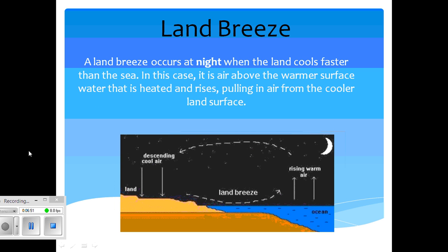With land breeze, a land breeze occurs at night time when the land cools faster than the sea. In this case, it is air above the warmer surface water that is heated and rises, pulling air from the cooler land surface. And that concludes today's lesson on winds.